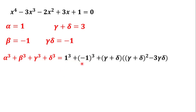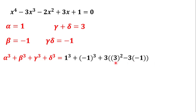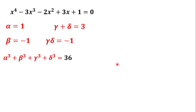Now, 1 cubed plus (minus 1) cubed equals 0. And gamma plus delta is 3, gamma times delta is minus 1. So gamma cubed plus delta cubed equals 3 times (9 plus 3) equals 3 times 12 equals 36. Therefore the total sum is 0 plus 36 equals 36, which is our answer. Thank you for watching — please subscribe, like, and comment.